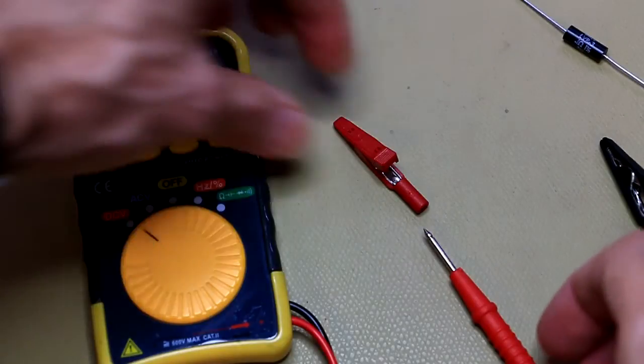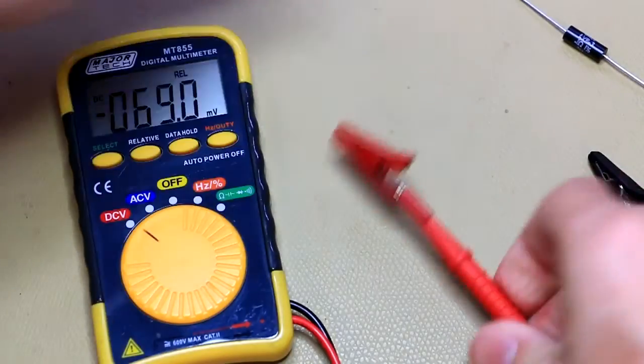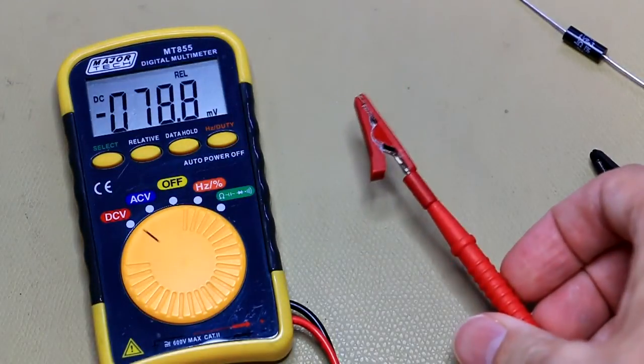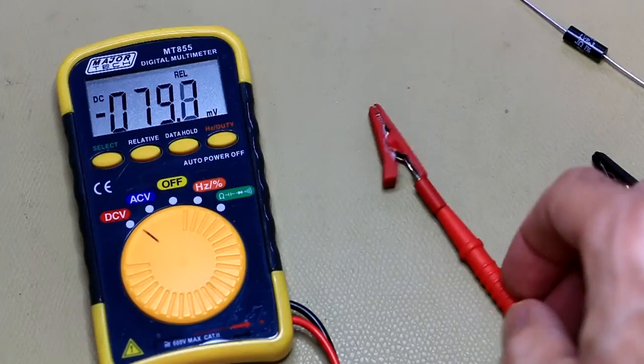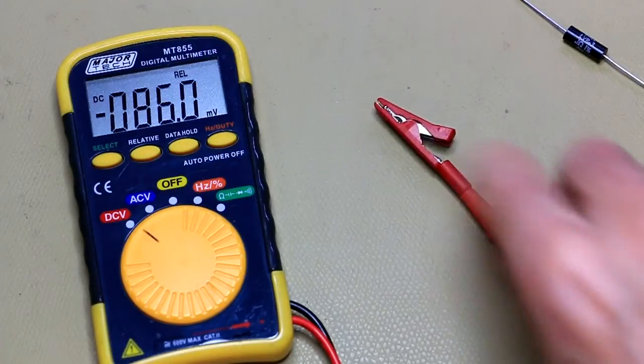Oh and before I forget, remember to get these very handy alligator clips from Frankie's store. He's the guy that runs 99 Cent Hobbies. I'll link this little product or the link to his store down below as well.